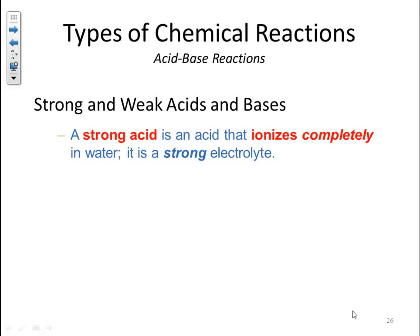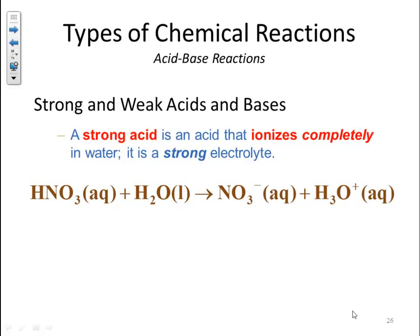A strong acid is an acid that ionizes completely in water — it is a strong electrolyte. For example, HNO3 is a strong acid that ionizes into nitrate and hydronium ion. When we say it's a strong acid, it completely ionizes. There is no HNO3 left; it breaks up 100% into ions.